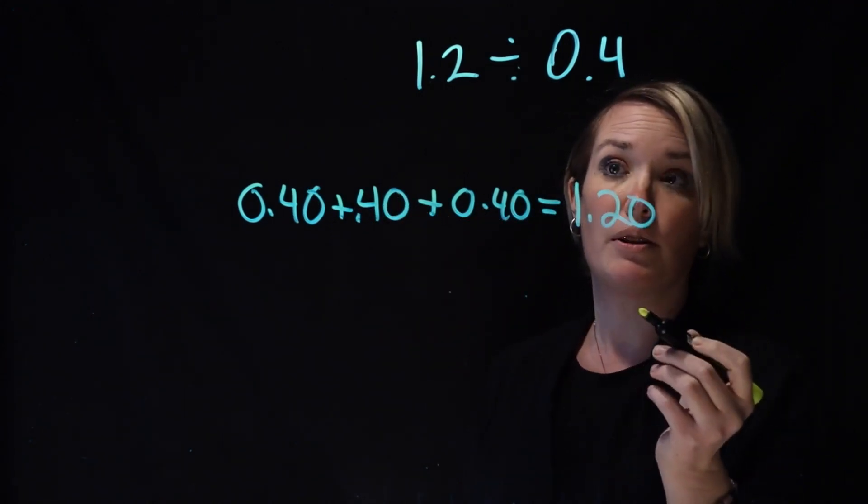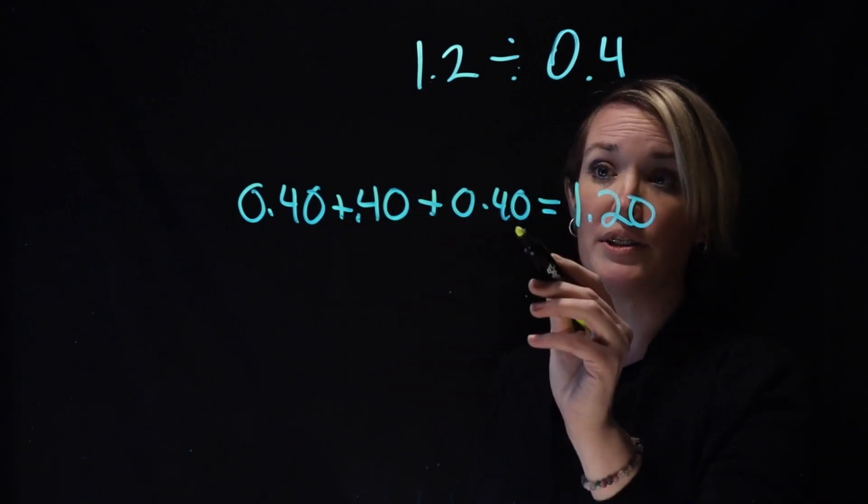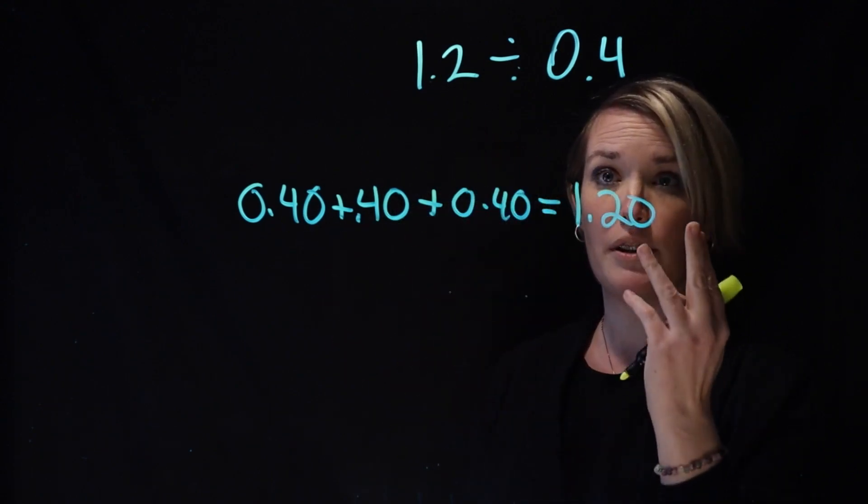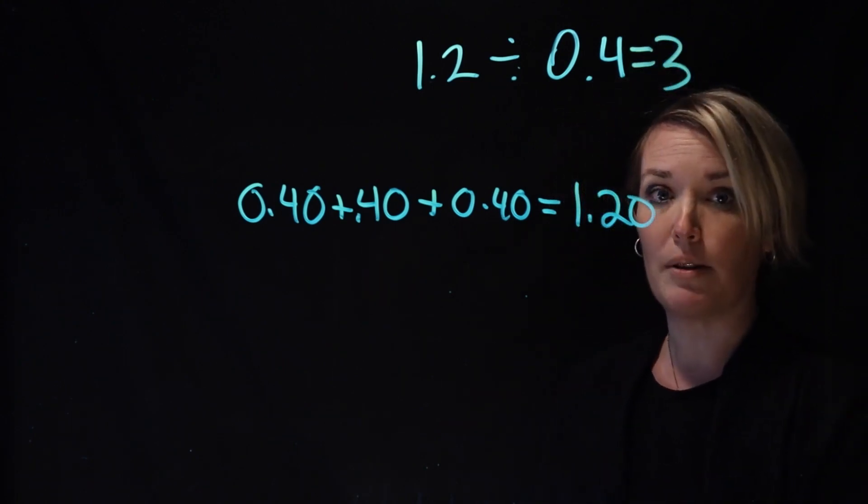She said, well, there we go. So it's one, two, three. 40 cents goes into $1.20 three times. Great job, Azzy.